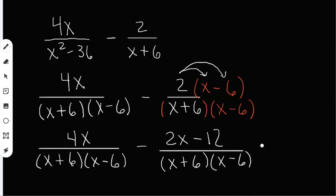So now that the denominators are the same, I can add and subtract the numerators. So notice that I'm subtracting in the middle. I have 4x minus 2x. That's going to give me 2x. And I have a minus negative 12, which is a double negative. That's going to become a plus 12. And then I still have x plus 6 and x minus 6 at the bottom.